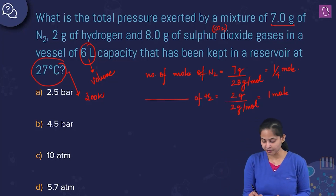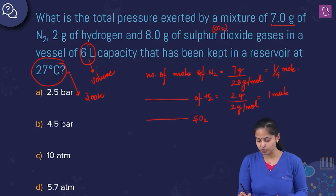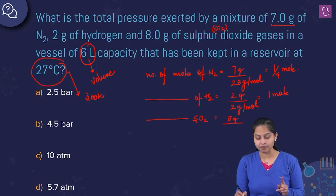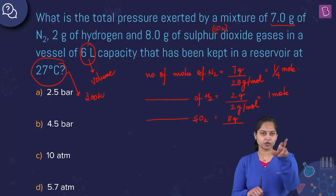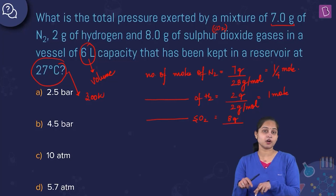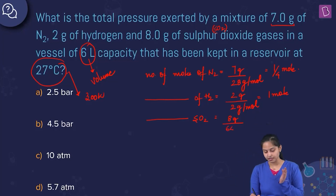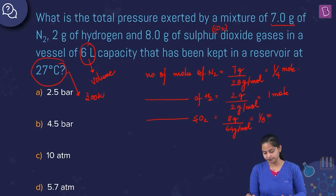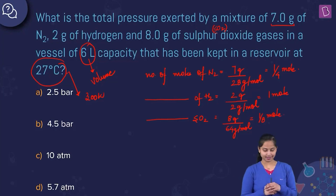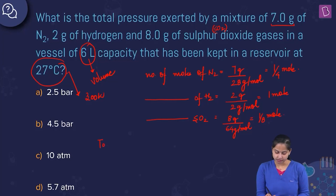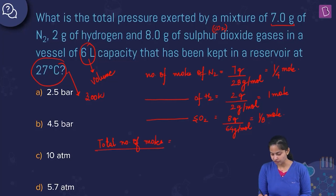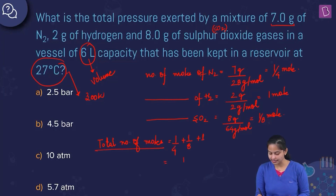Number of moles of sulfur dioxide SO2 equals given weight 8 grams divided by molecular mass of SO2. The molecular mass of sulfur is 32, and for 2 oxygen atoms it's also 32, so 32 plus 32 is 64 grams per mole. So moles of SO2 equals 1/8 mole. Total number of moles equals 1/4 plus 1/8 plus 1, which gives 11/8 moles.